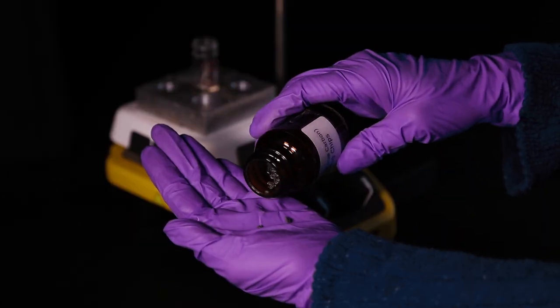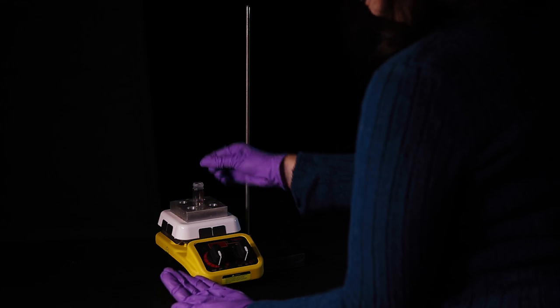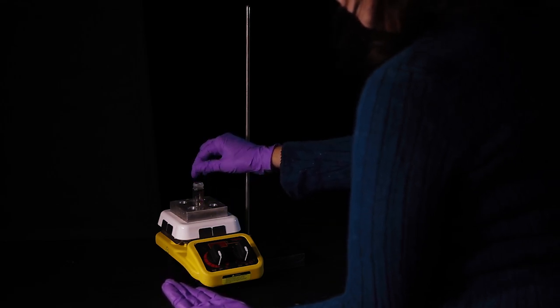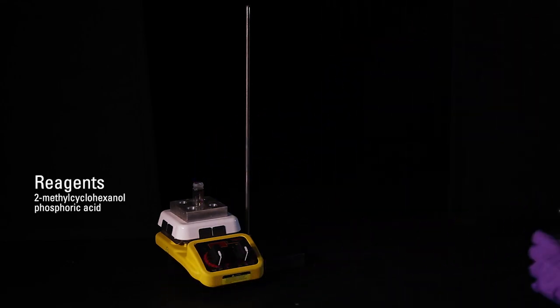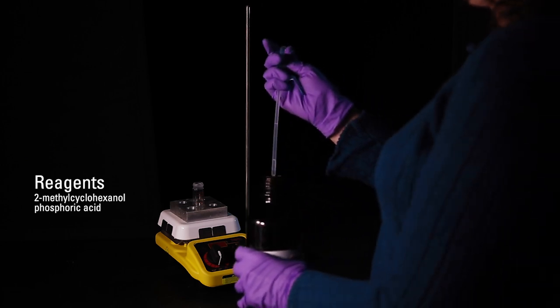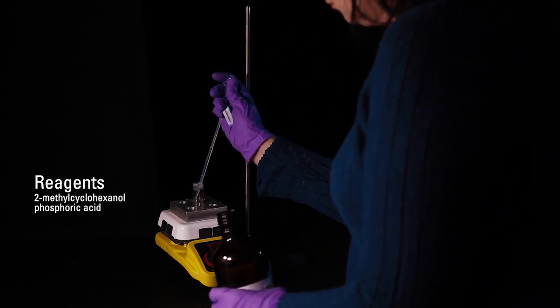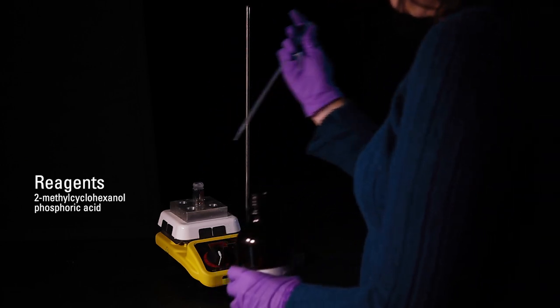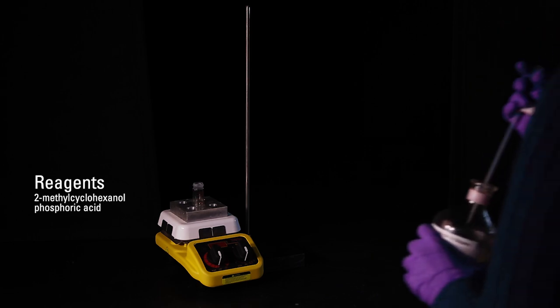At this point, add 2 or 3 boiling chips to the conical vial, then add the reagents to the vial. In this particular case, the reagents are 2-methylcyclohexanol and phosphoric acid.